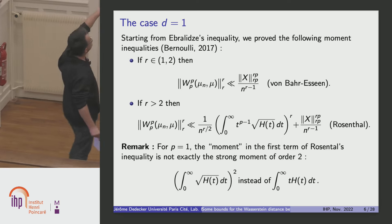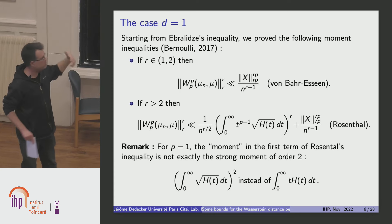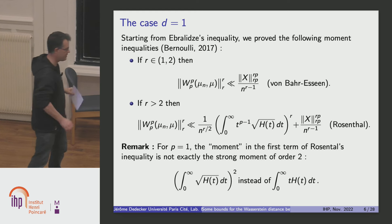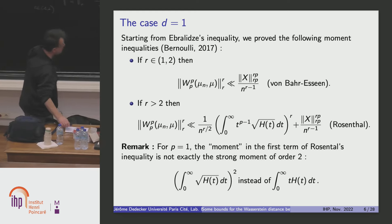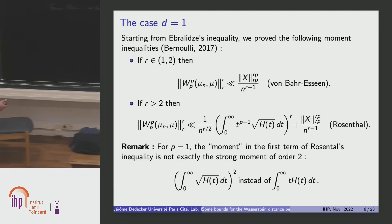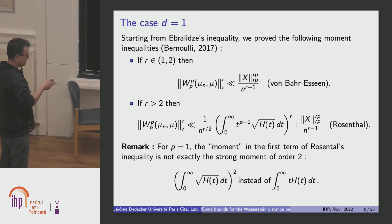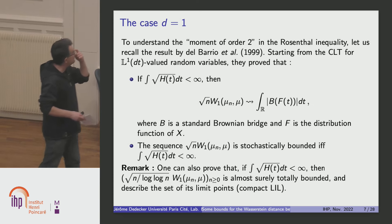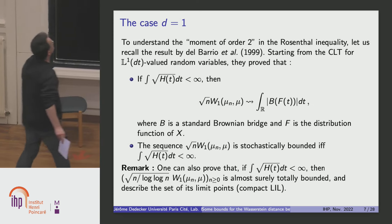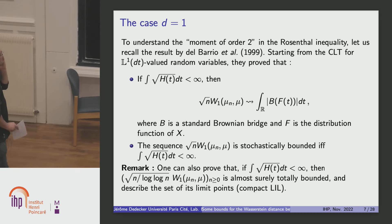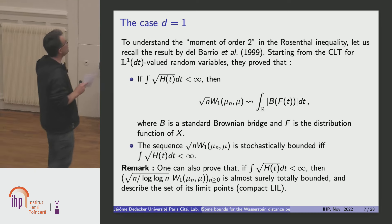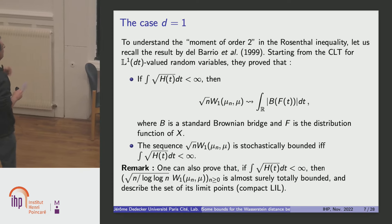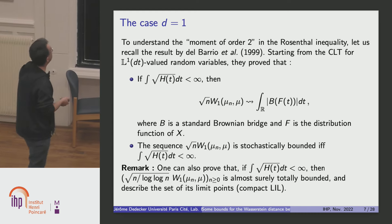I don't mention the case R exactly equal to 2 because I wanted just to separate the two cases, but it's exactly that. In the case D equal 1, we have a result from Del Barrio, Giné, Matrán, proving the central limit theorem for W1. And this central limit theorem is as follows.